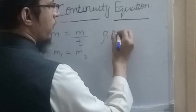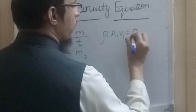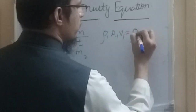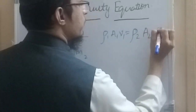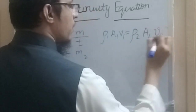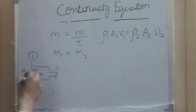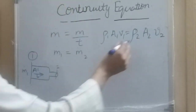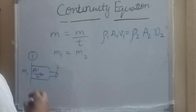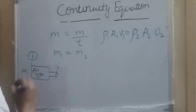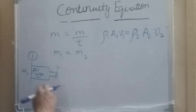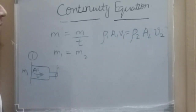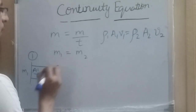In the equation rho1 A1 V1 equals rho2 A2 V2: rho1 and rho2 are the densities at sections 1 and 2, A1 and A2 are the cross-sectional areas at sections 1 and 2, and V1 and V2 are the velocities at sections 1 and 2.